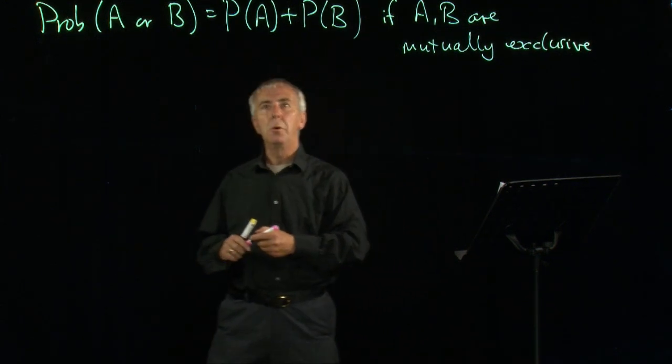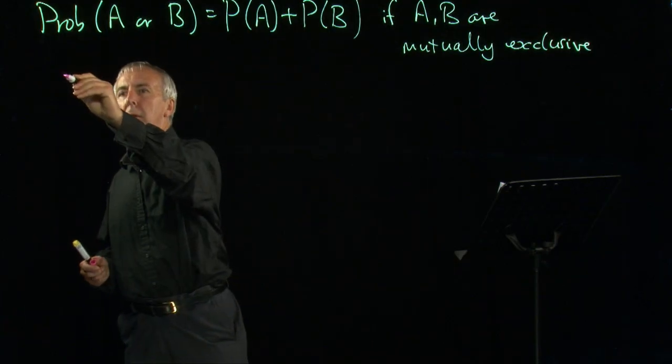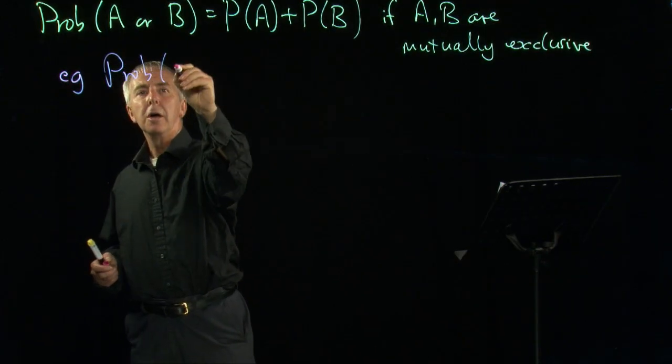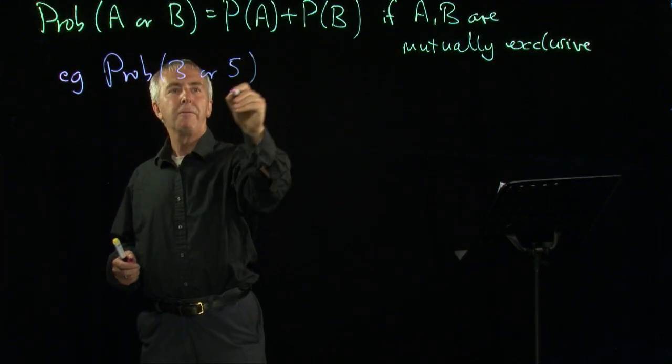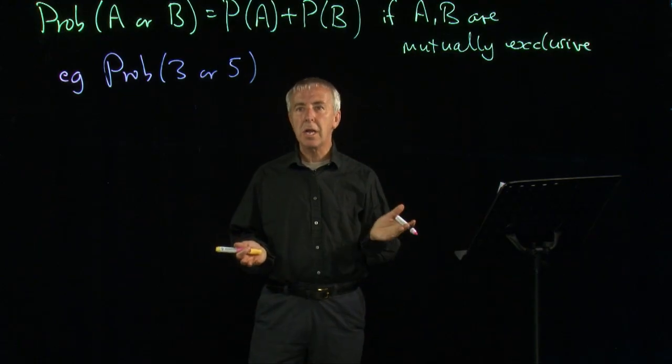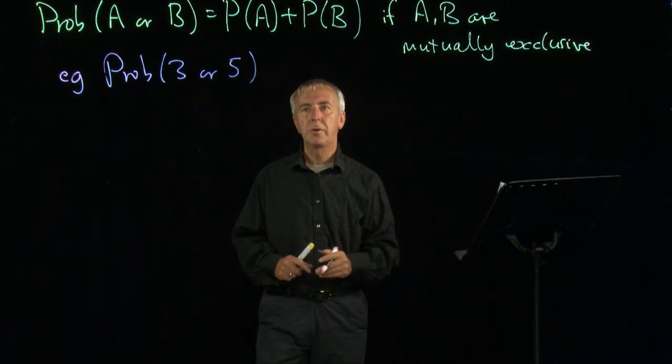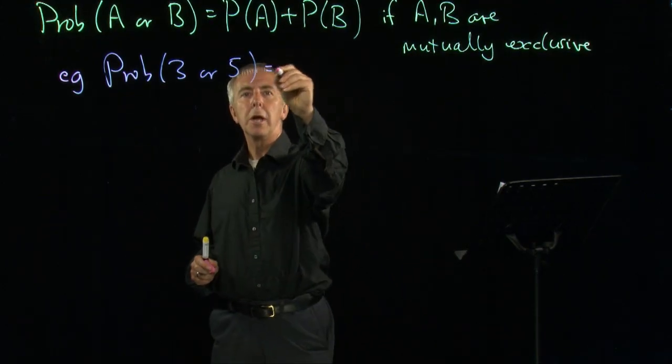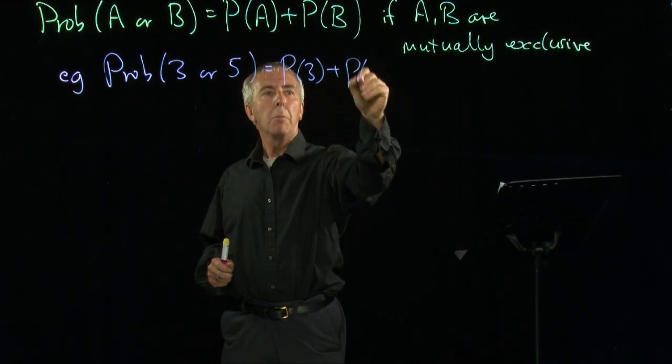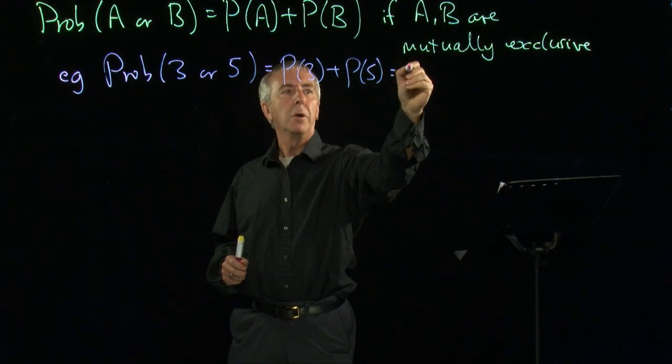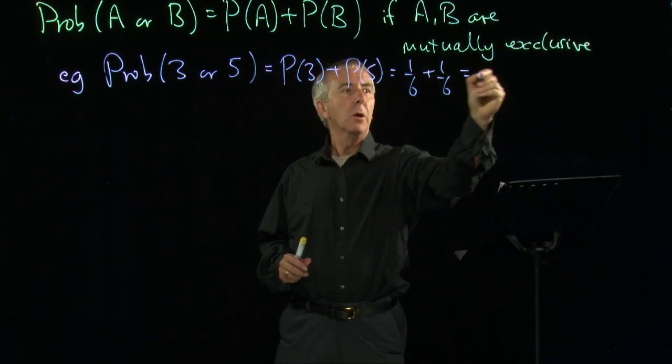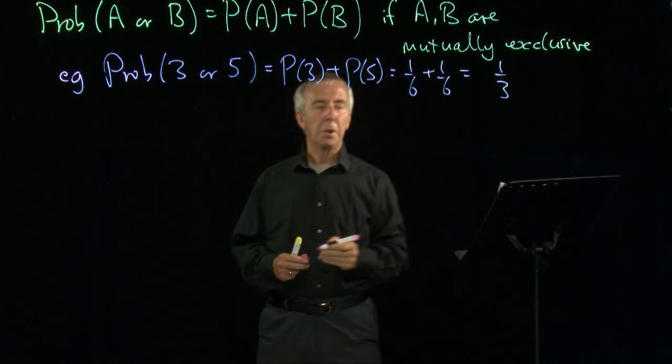So for example, with our dice, if I roll the dice, what's the probability of getting a three or a five? They can't happen together. If you get a three, it excludes a five and vice versa. So we can use this rule here and we just get the probability of a three plus the probability of five, which is 1/6 plus 1/6, which comes to 1/3.